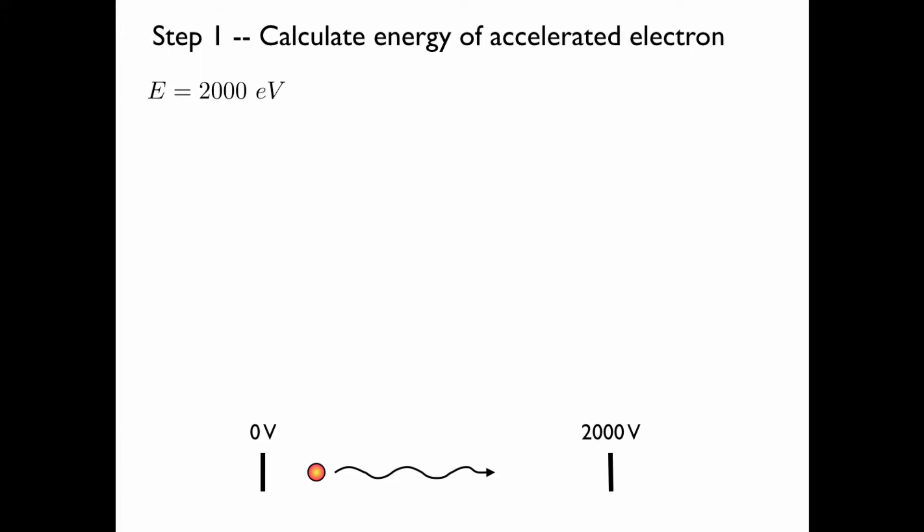The energy is 2,000 electron volts, because recall that 1 electron volt is the amount of kinetic energy an electron will have after being accelerated from 0 to 1 volt. So if we go from 0 to 2,000 volts, the energy is 2,000 electron volts. We convert this to joules by multiplying by the conversion factor, which gives us our energy in joules.